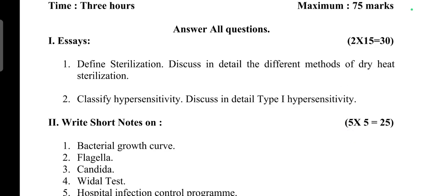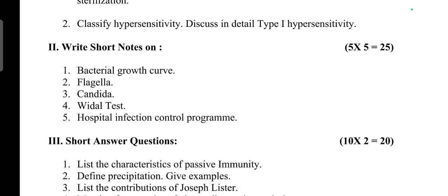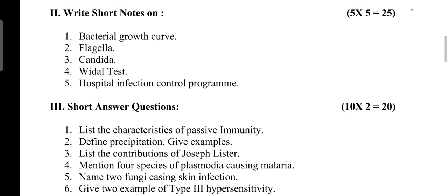Answer all questions. First question part A: Define sterilization and discuss in detail the different methods of dry heat sterilization — 15 marks. Part B: Classify hypersensitivity and discuss in detail Type 1 hypersensitivity — 15 marks. Total 30 marks.